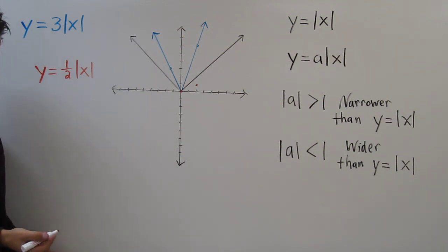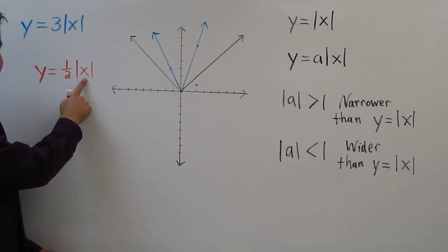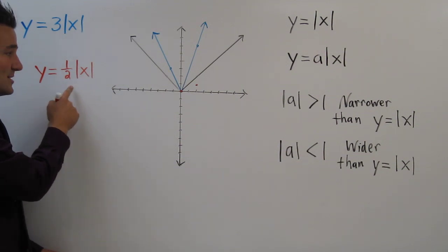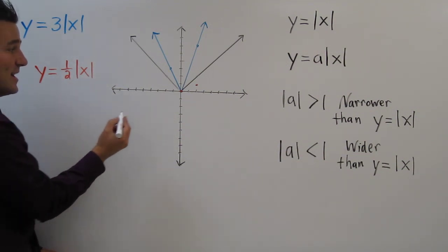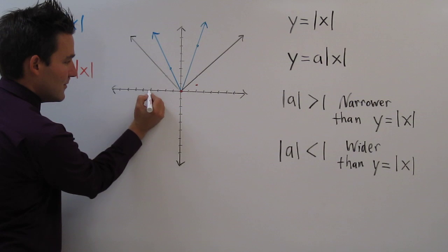How about when x equals negative 4? Negative 4's absolute value is 4 times 1 half, we have 2. So we have the point (-4, 2).